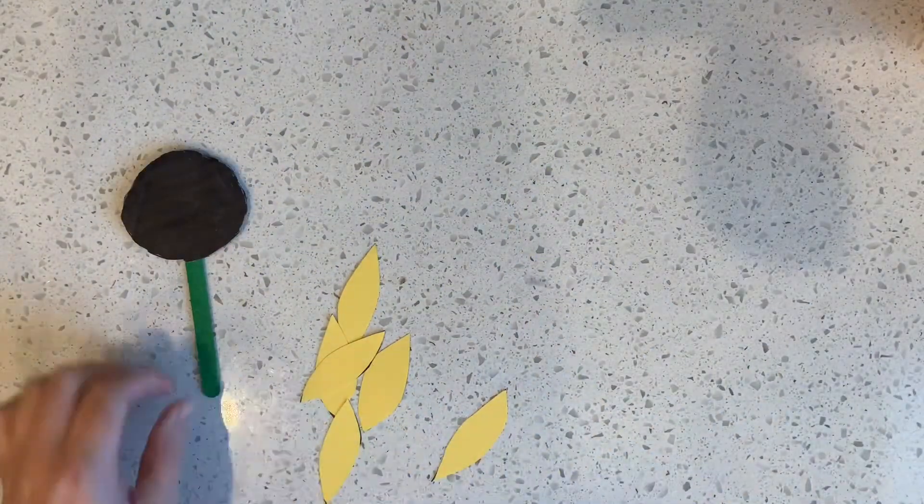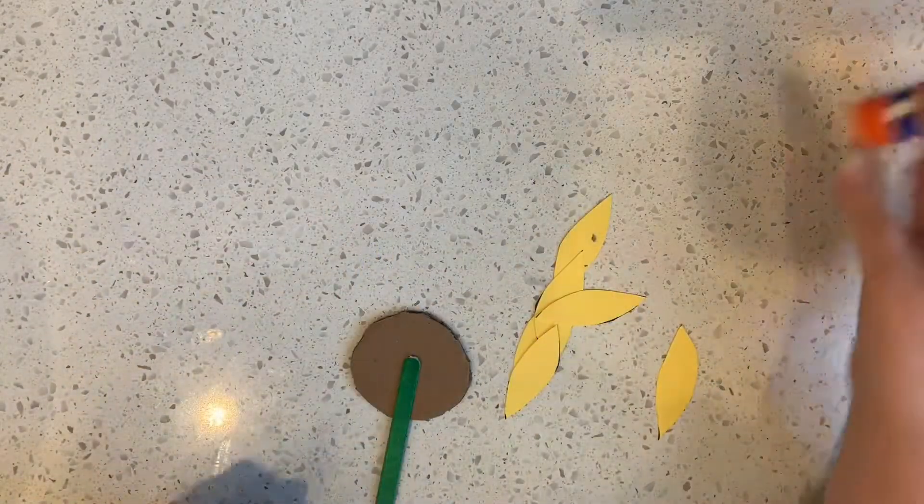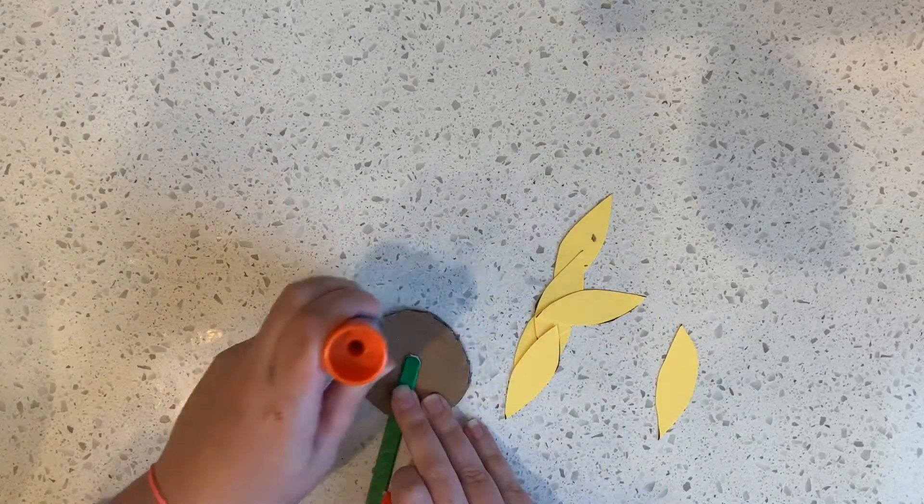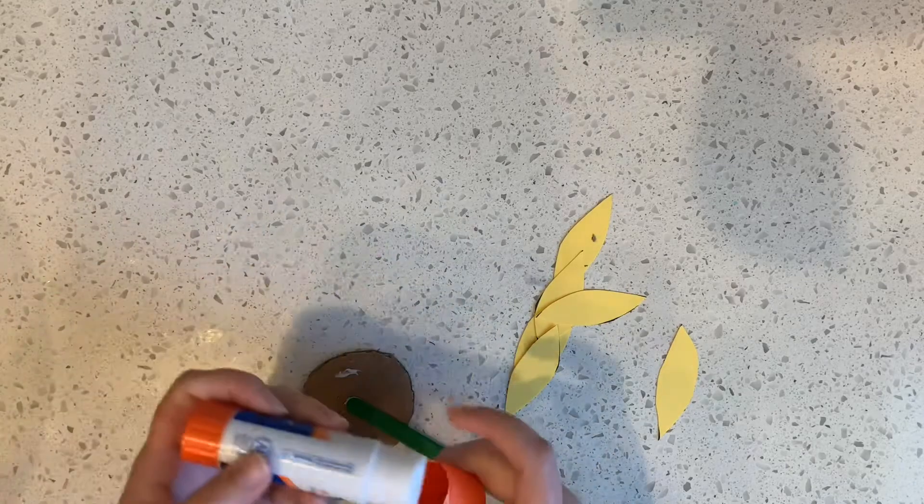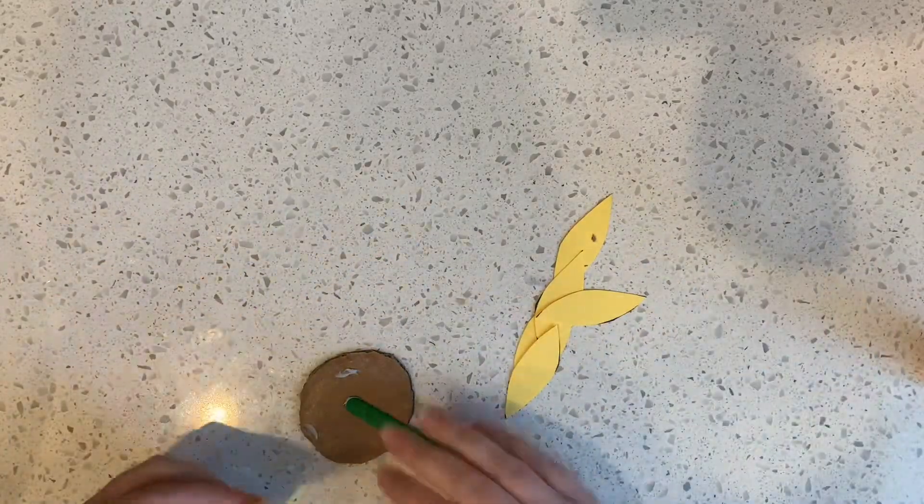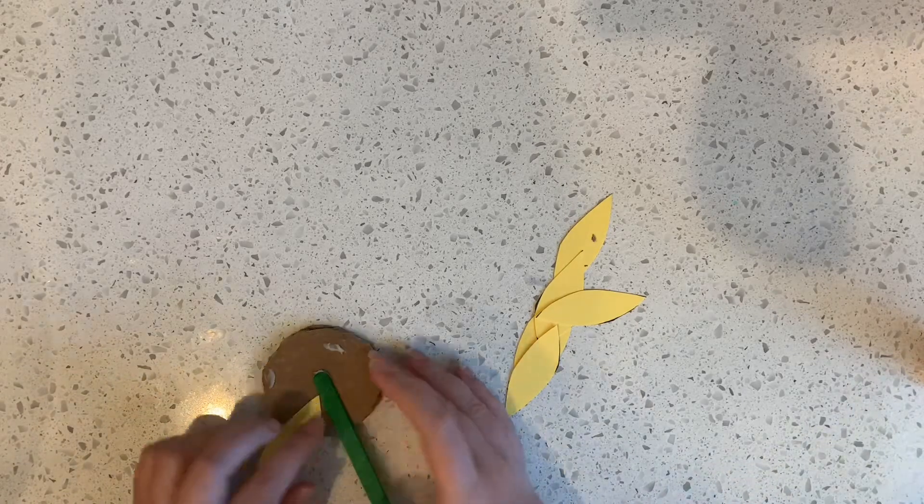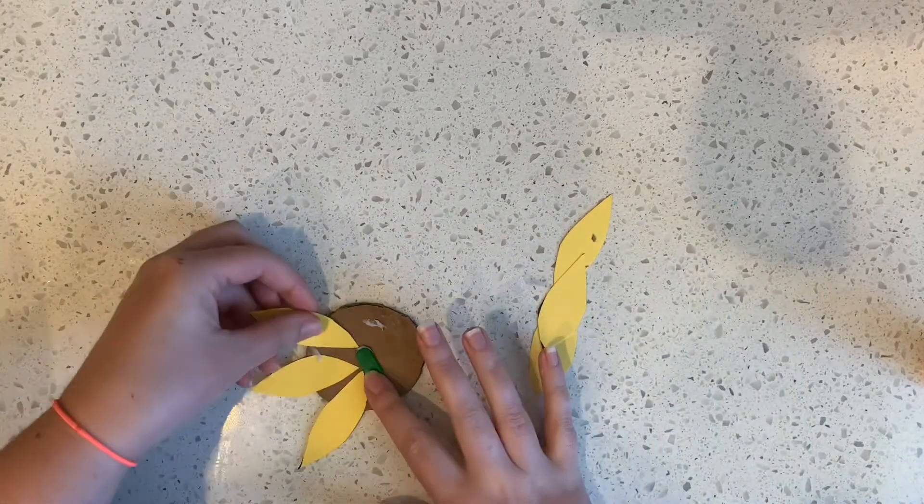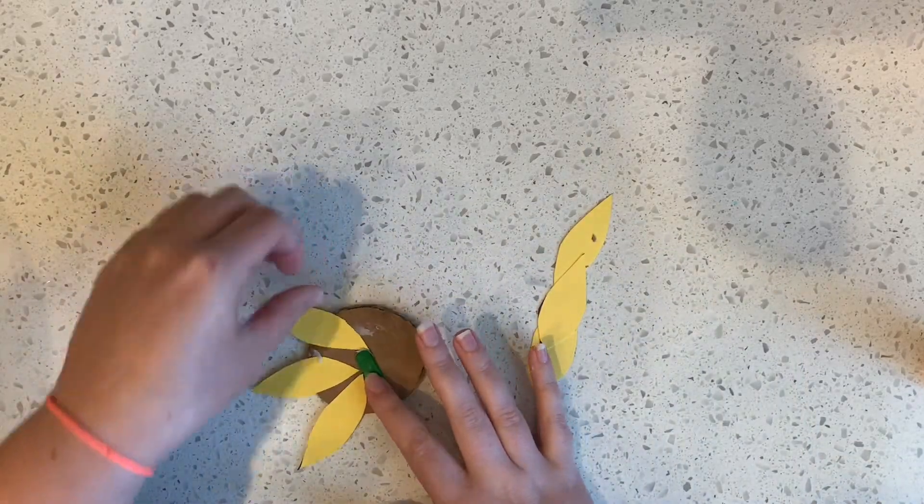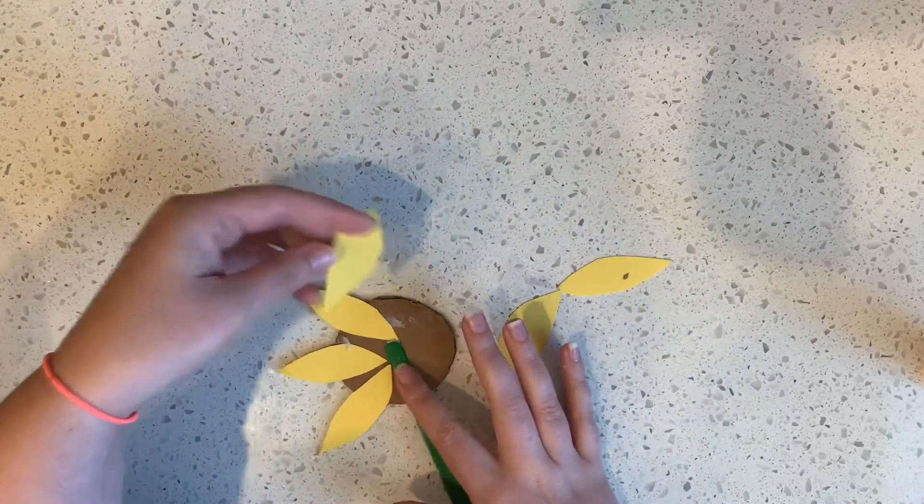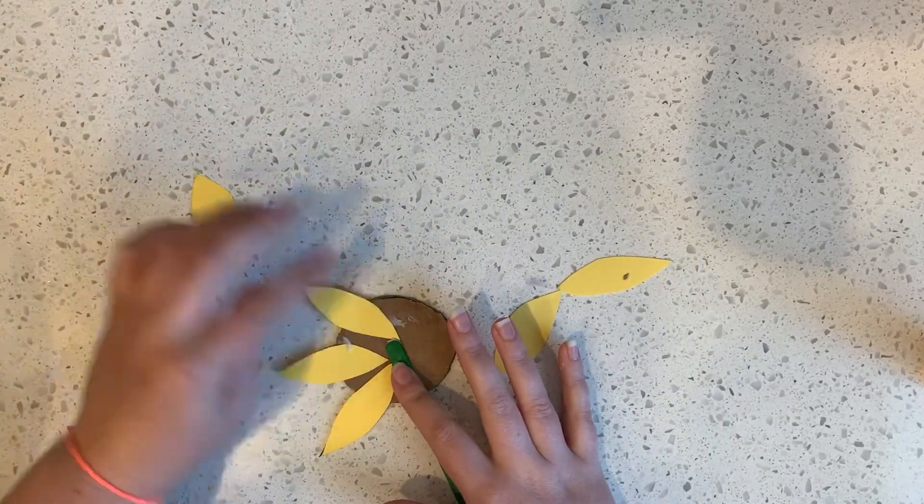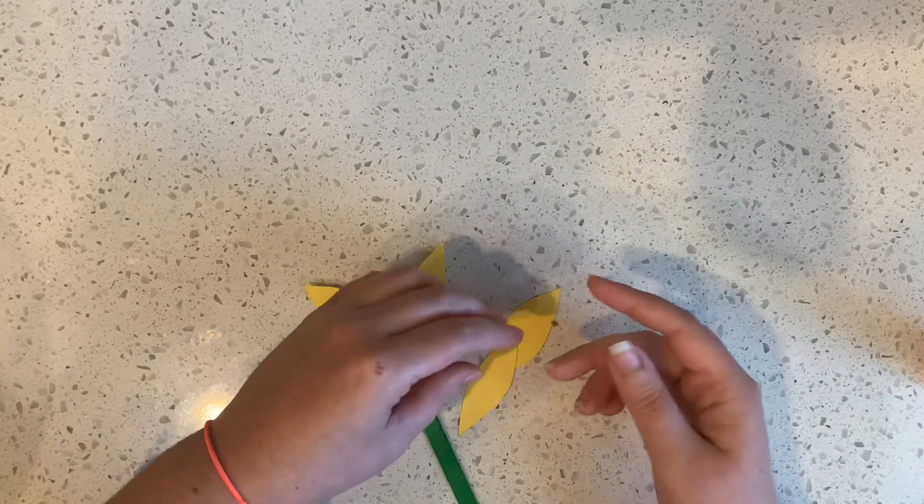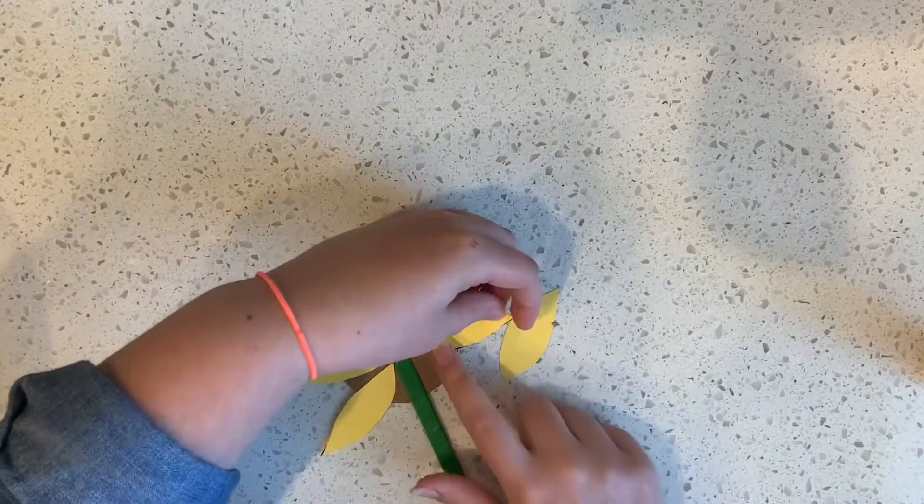All right. Six petals. So I'm going to glue them on the back of my sunflower middle bit. One, two, three, four, five, six.